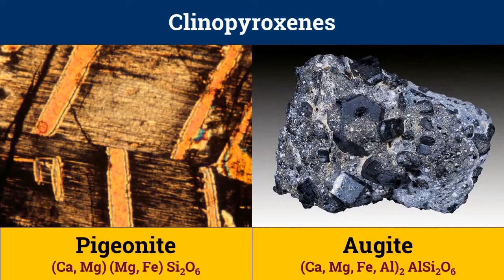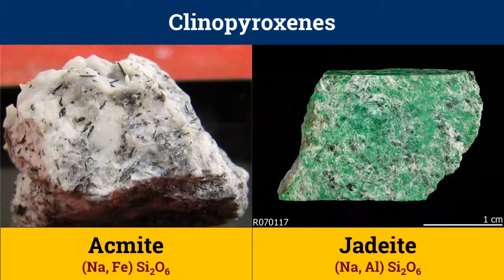Pigeonite is another clinopyroxene and can be distinguished by its small optic axial angle. In layered igneous intrusions, pigeonite is found as phenocrysts in volcanic rocks on Earth and as crystals in meteorites from Mars and the Moon. Augites are the most common clinopyroxenes and are an essential constituent of basic igneous rocks, but they also occur in ultrabasic rocks. Acmite and jadeite are alkali clinopyroxenes.